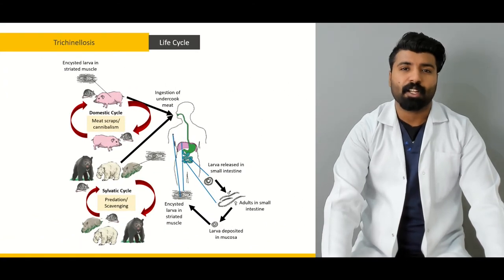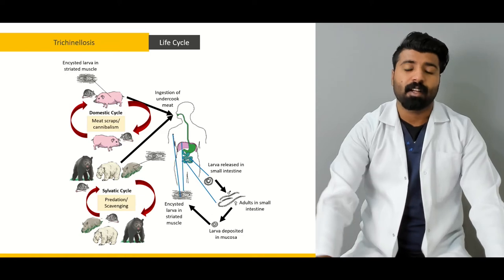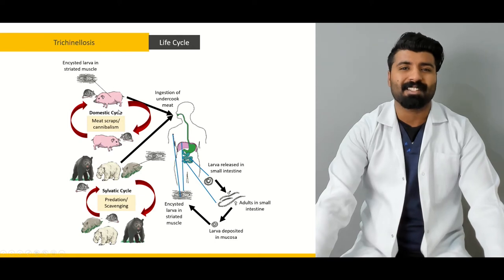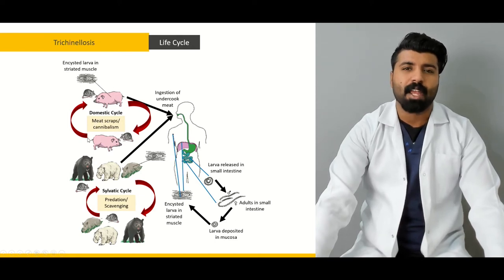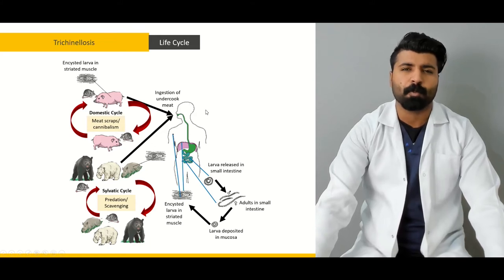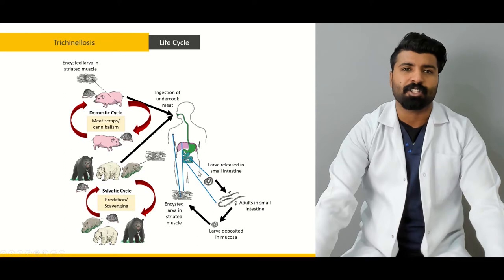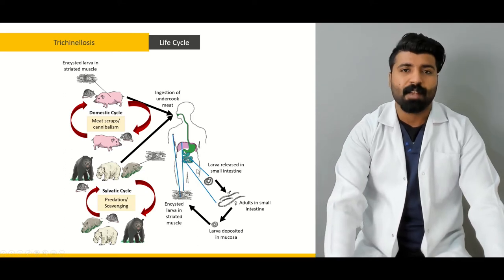Next, we're going to talk about the life cycle of trichinella, in which we'll cover two different life cycles: the sylvatic life cycle, in which predation and scavenging come through, and the domestic cycle, in which meat scraps and cannibalism will come through. Then we're going to talk about the third life cycle, which happens more predominantly in humans, in which larval migration and entry into the adult form leads to intestinal infestation.